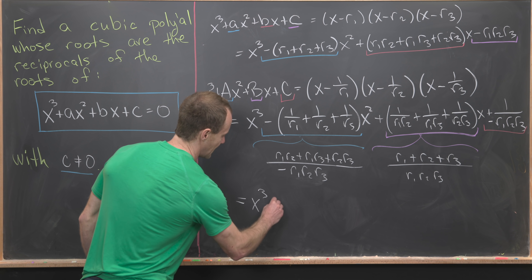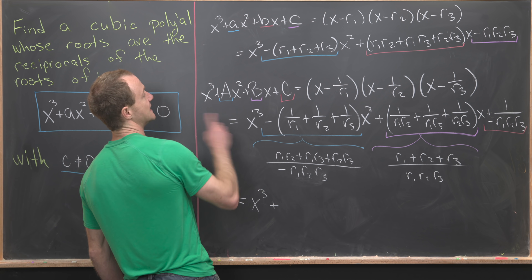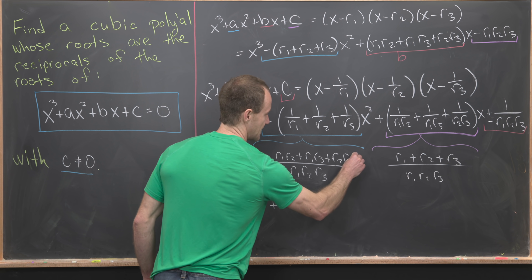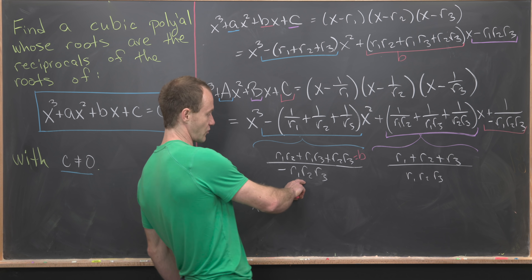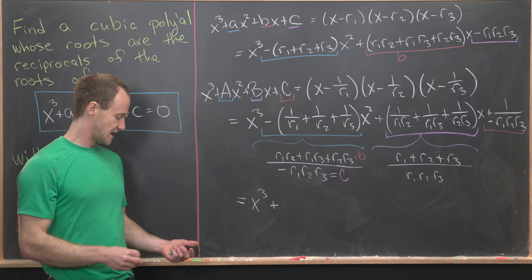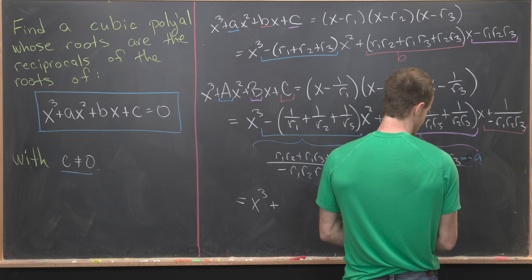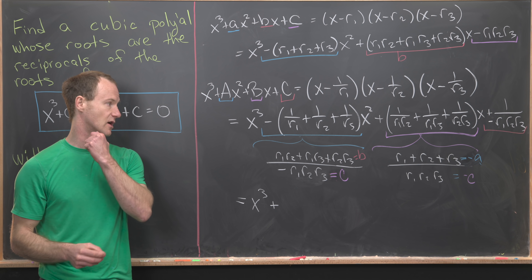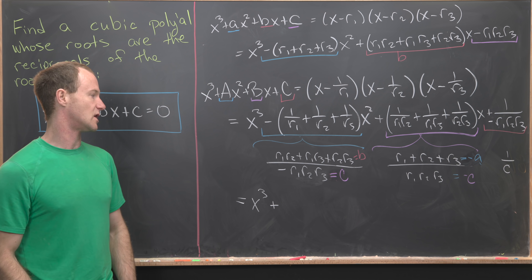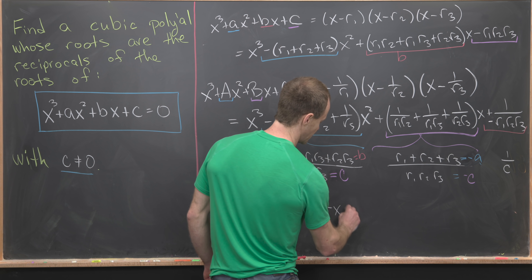We notice that r1r2 plus r1r3 plus r2r3 is exactly b, and the product r1r2r3 in the denominator with the minus sign is exactly negative c. So the coefficient of x squared becomes b over c. Similarly, the numerator r1 plus r2 plus r3 with the minus sign absorbed gives negative a over negative c, which is a over c. And finally, the constant term is 1 over r1r2r3, which is 1 over negative c — giving negative 1 over c, but with the attached minus sign becomes 1 over c.